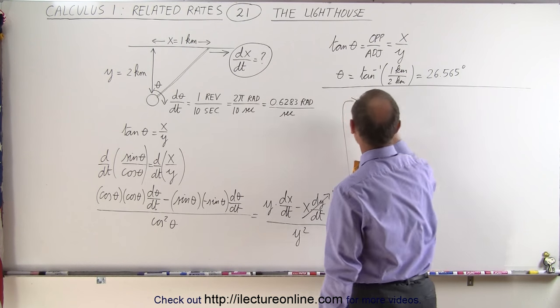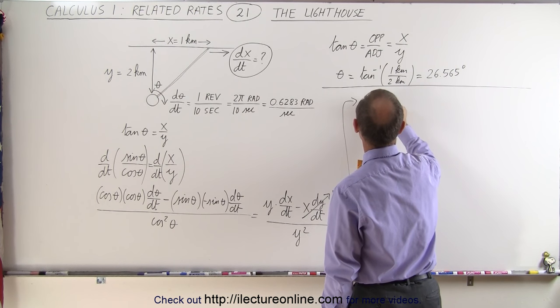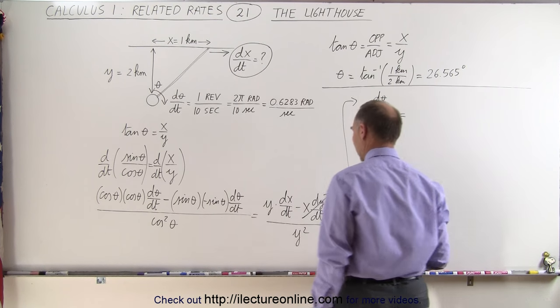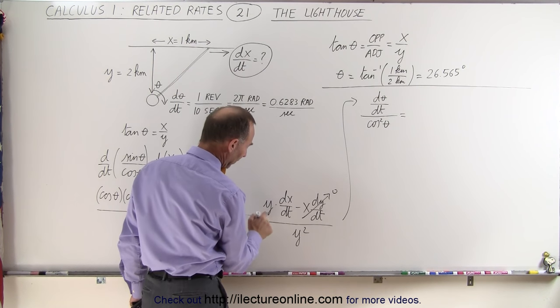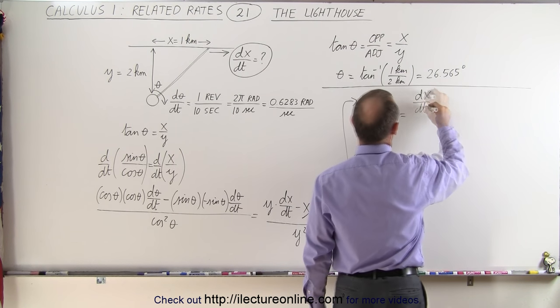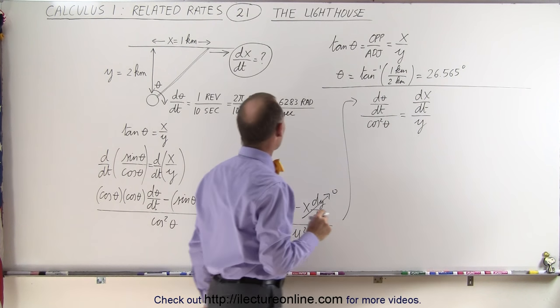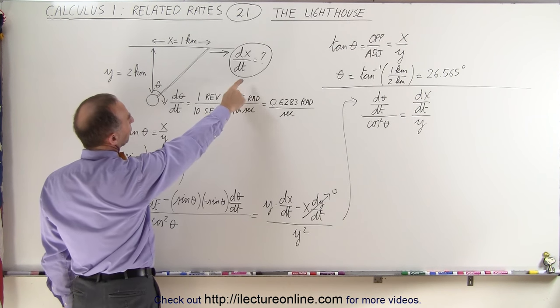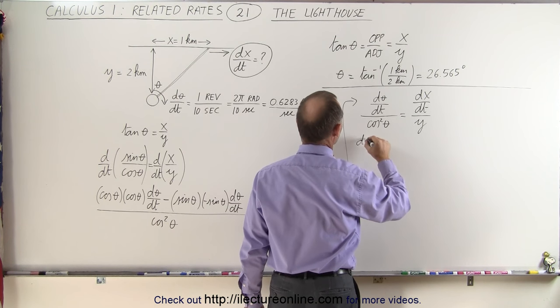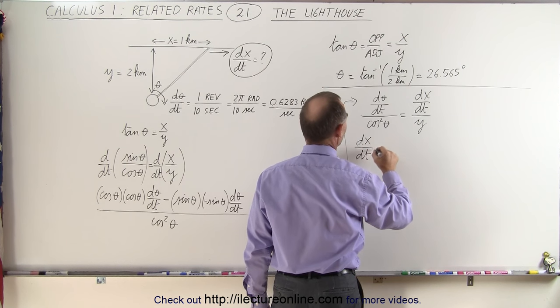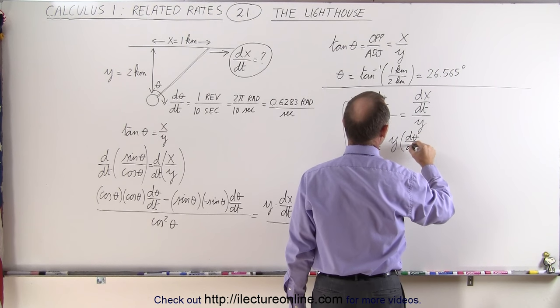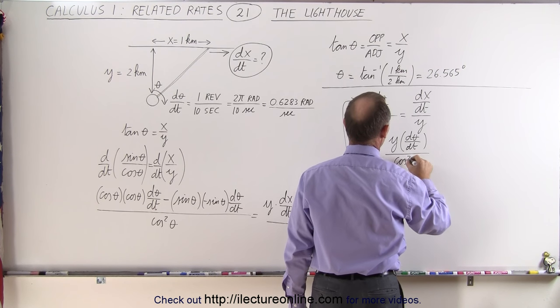So on the left side I end up with dθ/dt divided by cos²(θ), and on the right side, notice when this goes to zero I have a y here and a y² there, so I end up with dx/dt divided by a single y. Now remember, what I'm looking for is dx/dt, so I have to solve that equation for dx/dt. We end up with dx/dt = y × dθ/dt / cos²(θ).